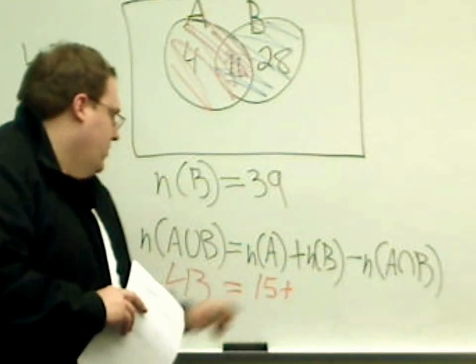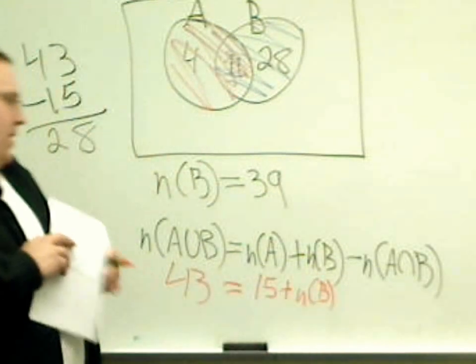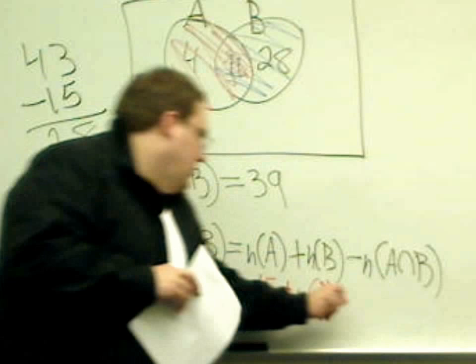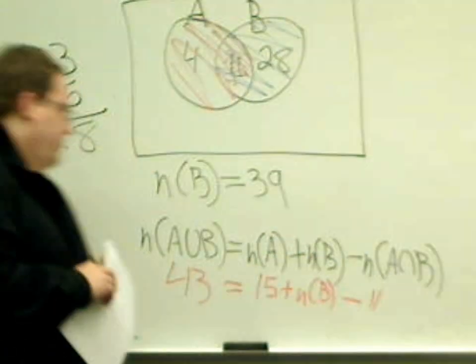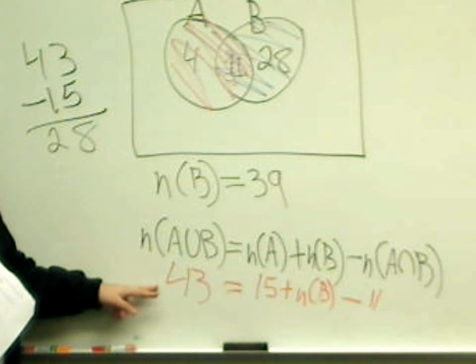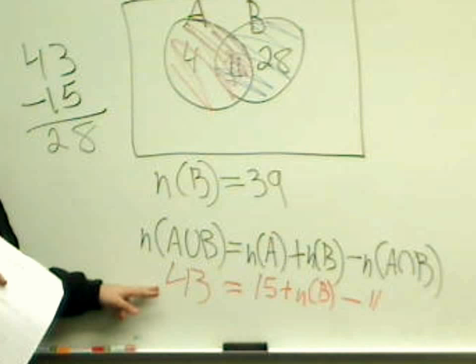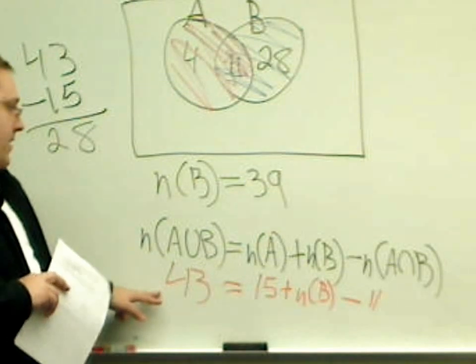We didn't know how many things were in B, so we'll just leave it as n of B. But we knew how many things were in the intersection. And there was 11, so subtract 11. If you simplify this equation, you'll find that the number of things in B, the number of elements in B, will still come out to be 39.